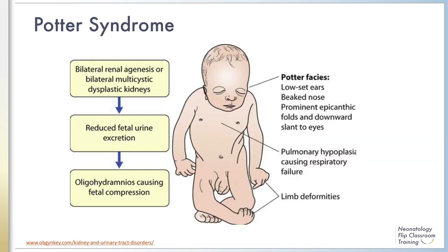In Potter syndrome, anuria and renal failure lead to oligohydramnios and intrauterine compression of the fetus — factors associated with aberrant lung development during the canalicular and saccular stage and development of pulmonary hypoplasia.